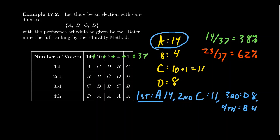I want to illustrate this even more. In this election, everyone who didn't vote for A as their first choice put A as their last choice. So 62% of the voters put A as their last choice — a majority of voters think A is the worst of the four candidates. But by plurality, A would win because A has the most first place votes. With plurality, it's possible that a candidate who has a majority of last place votes can still win the election because they happen to have the most first place votes. Is that really a fair thing? We'll talk about that another time.